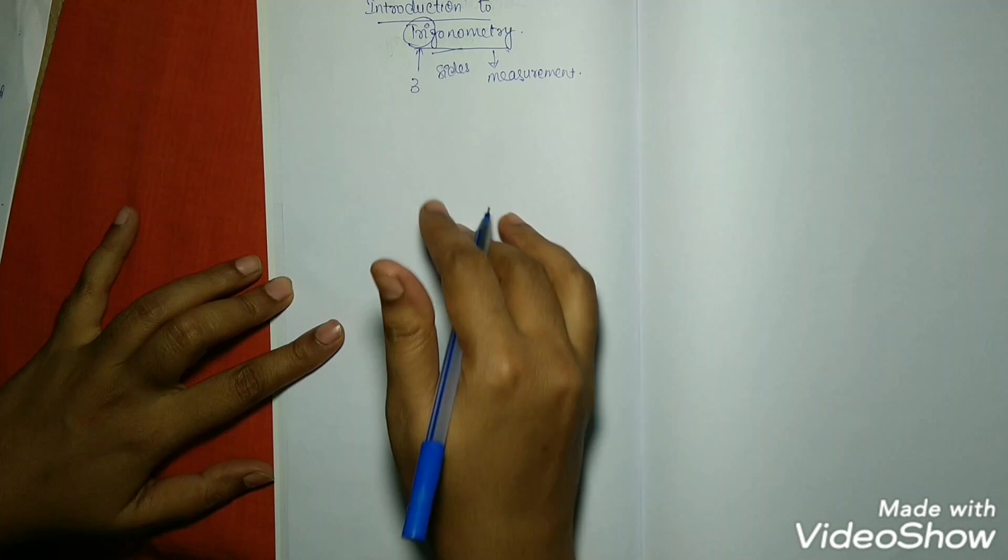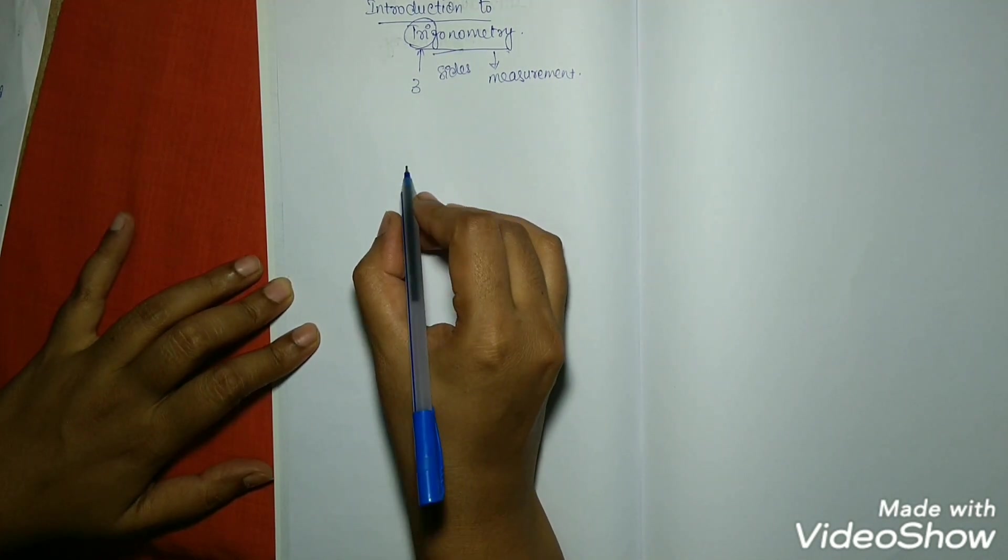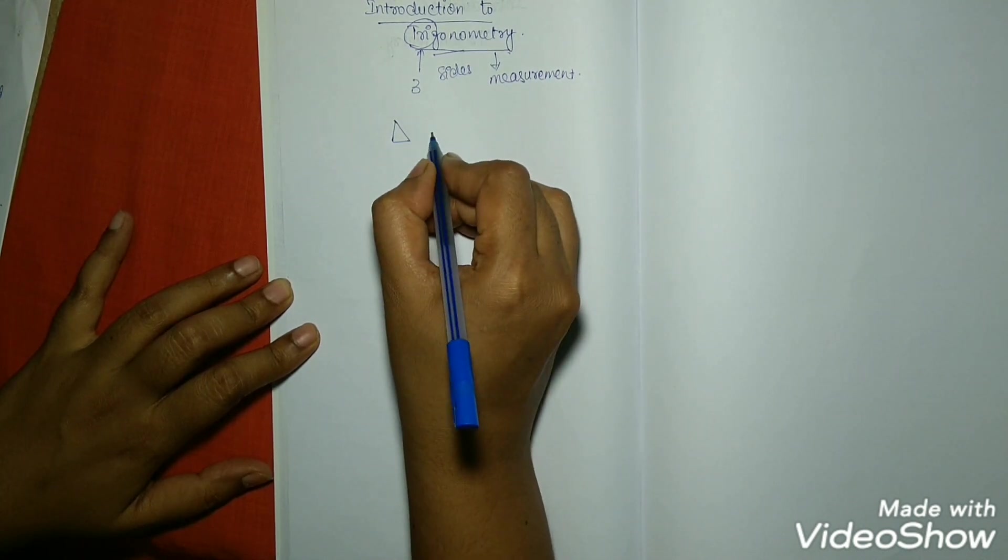The study of relationship between sides and angles of triangles, particularly right angle triangles, is studied in trigonometry.